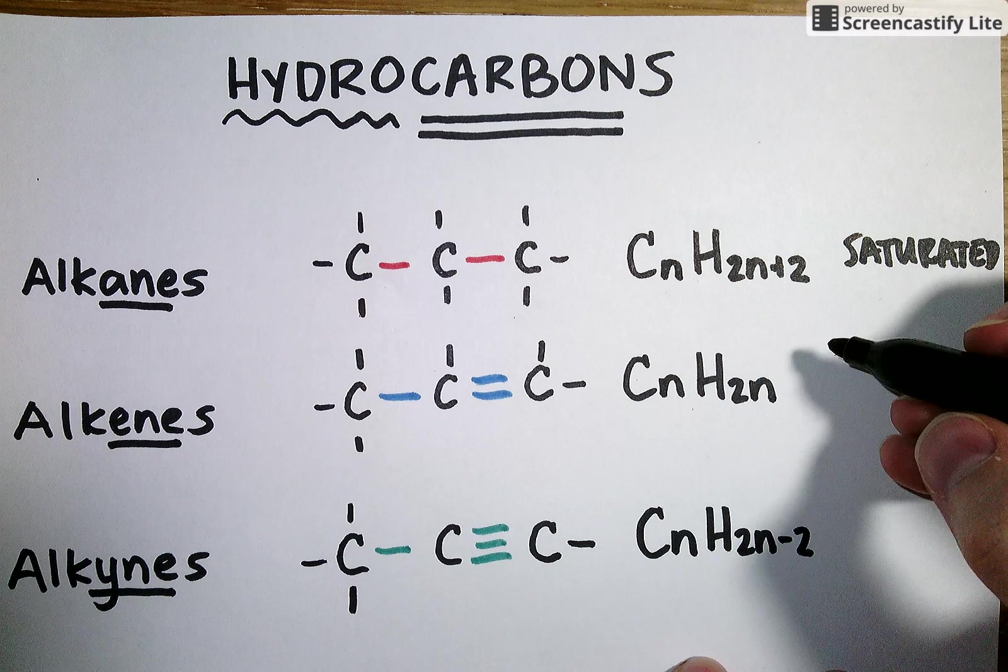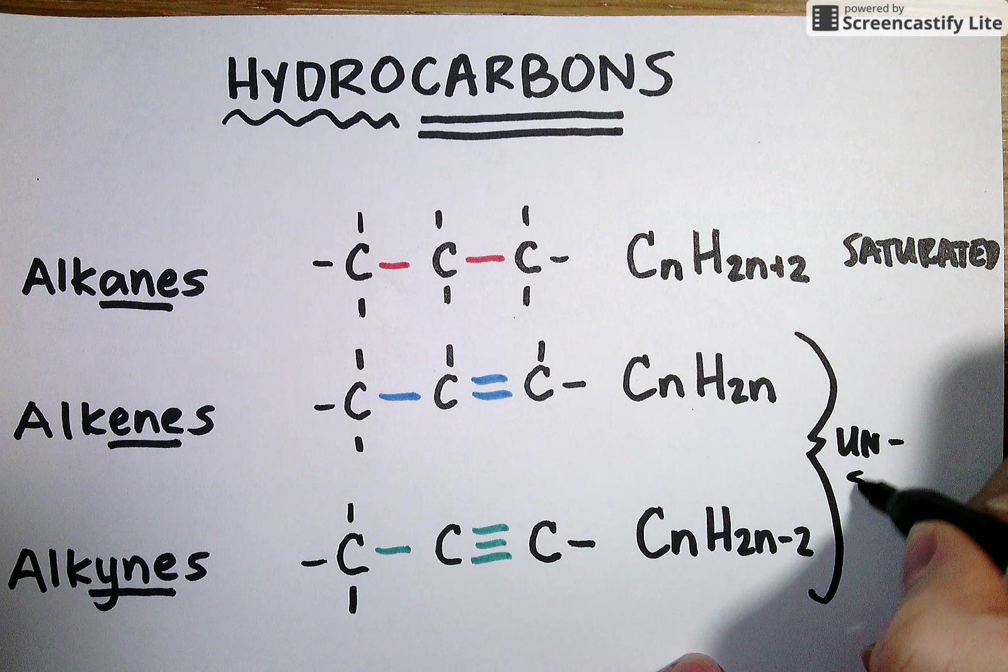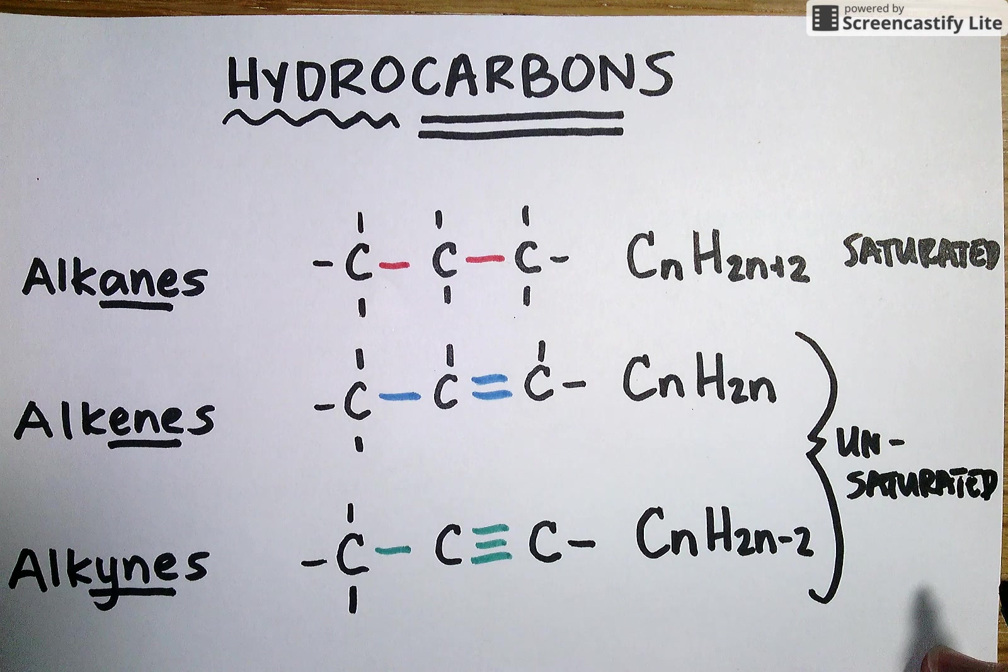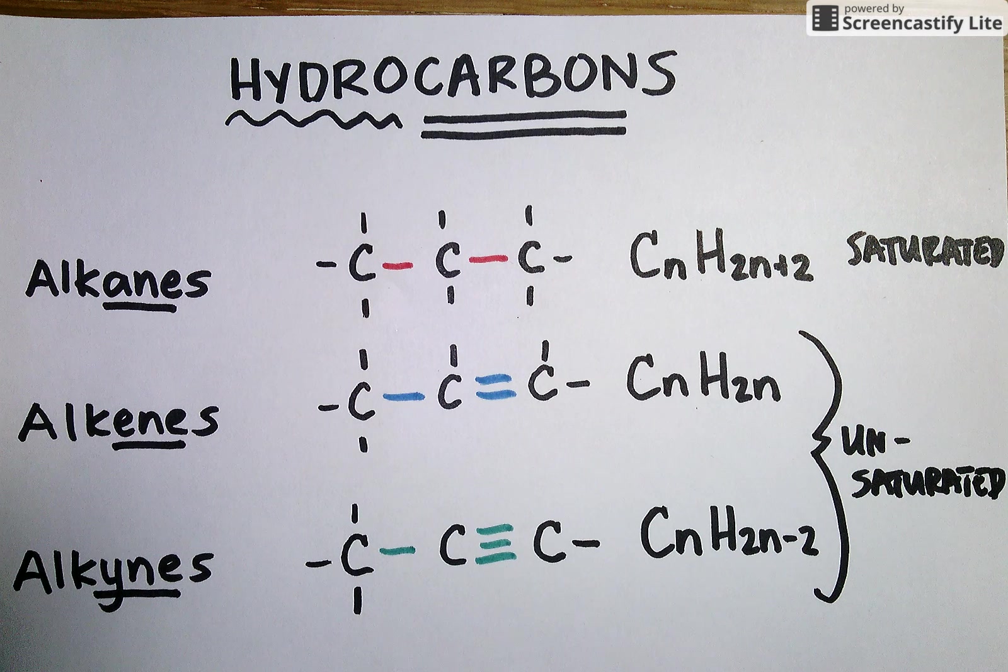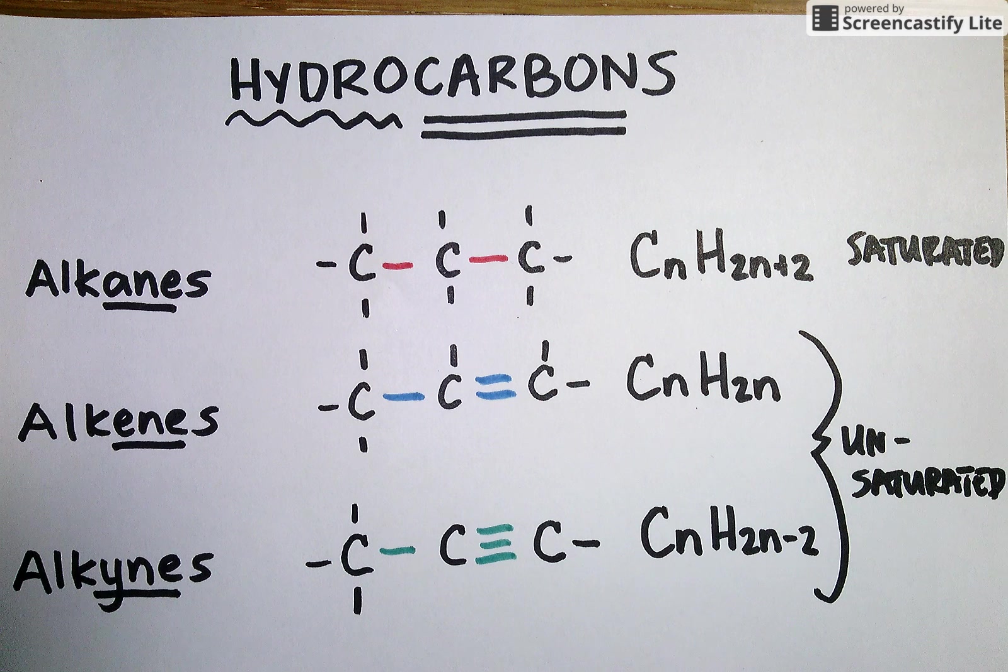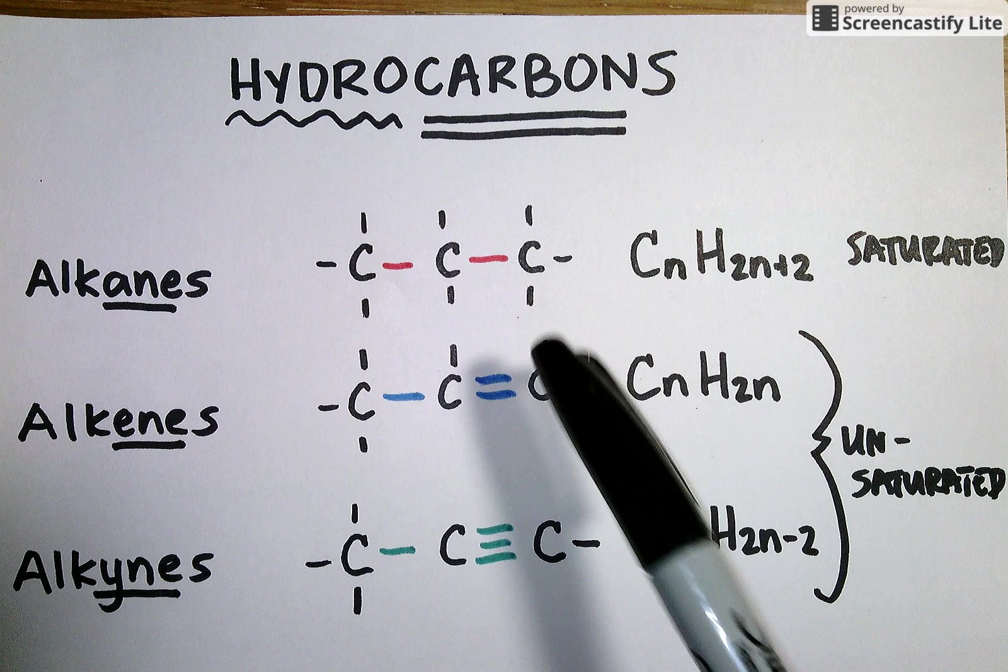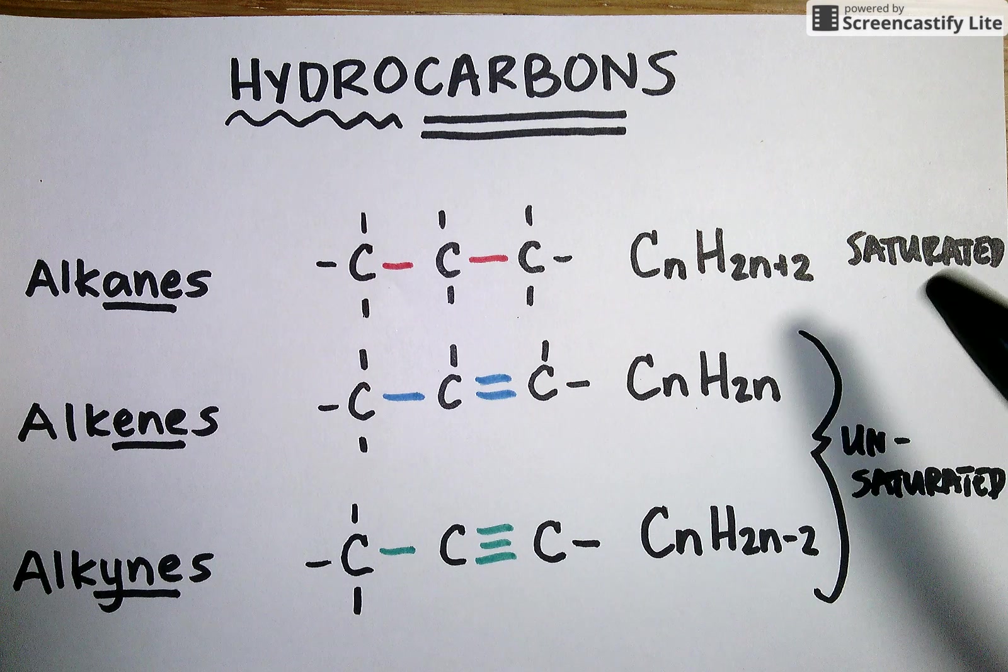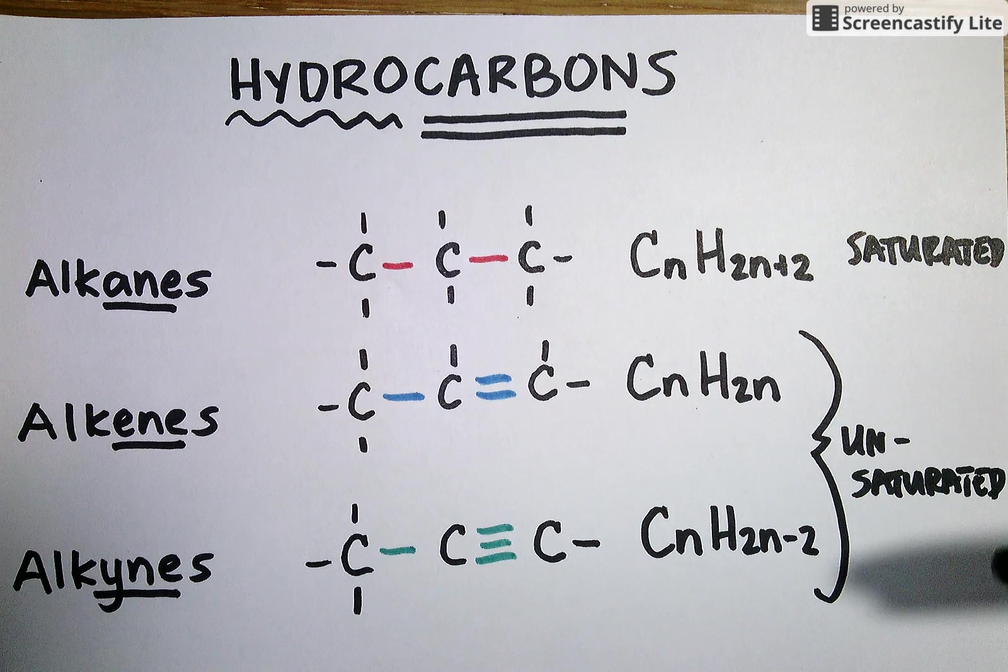Both alkenes and alkynes can be described as unsaturated hydrocarbons because they are not full of hydrogens. It kind of looks like there are these empty spaces above and below the carbons where hydrogens could have gone but didn't because each carbon already had its maximum number of bonds. So when we describe a molecule as saturated or unsaturated, what we're referring to is does it have all single bonds? Is it an alkane? That means it's saturated. Or does it have at least one multiple bond? Double or triple? If so, then it is unsaturated.